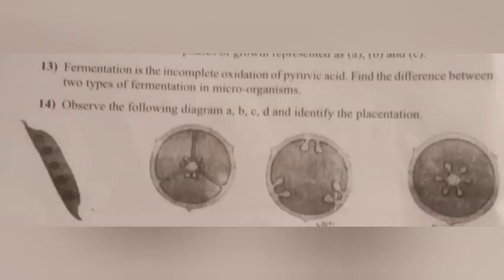Question 14. Observe the following diagram A, B, C, D and identify the placentation. Answer: A — Marginal placentation; B — Axial placentation; C — Parietal placentation; D — Free central placentation.